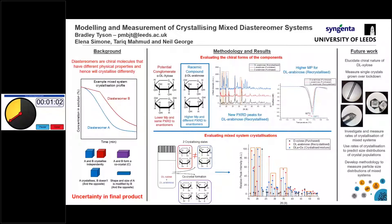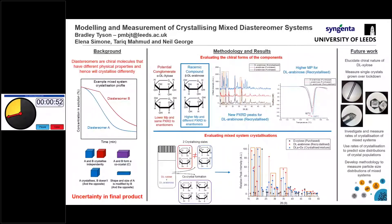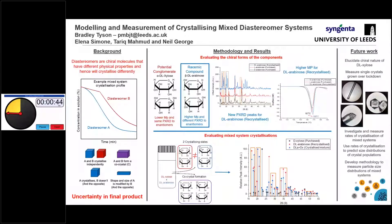If we were to form a co-crystal, we'd start to notice more peaks. You might also notice from the X-ray diffraction on the right at the bottom that there are more peaks matching with the arabanose. We think this might be because the xylose is being inhibited in its nucleation by the presence of the arabanose, which makes it really interesting to model.